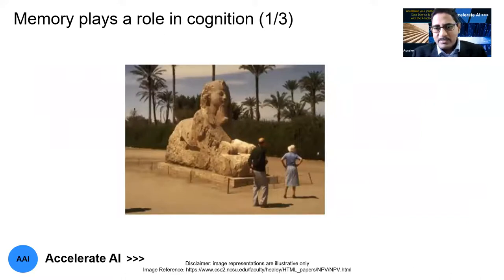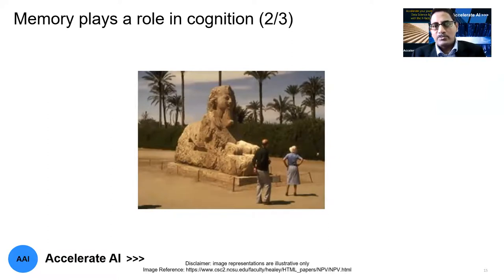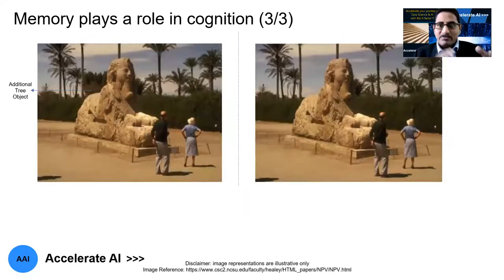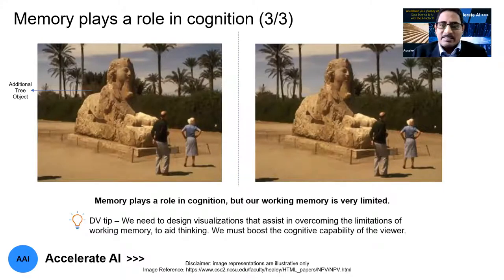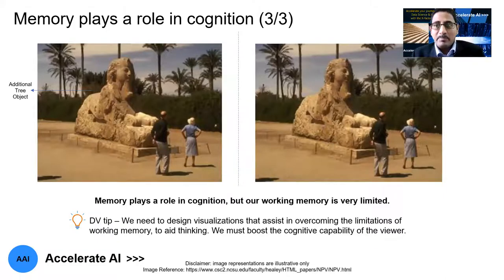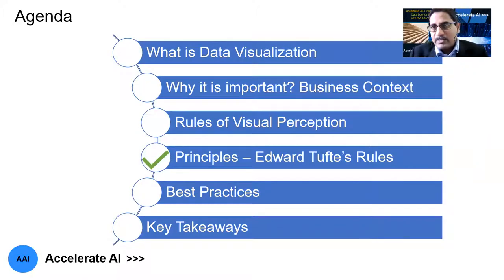Let's take a third example about memory and how it plays a role in our cognition. This is the first image. Now here is another image — did you find any difference? It's very difficult to tell. But if I compare both the first and second image side by side, you'll be able to see very clearly there is an additional tree object that differentiates the two pictures. What this means is memory plays a role in cognition. However, our working memory is limited, and we must work to boost the cognitive capability of the viewer who is looking at the visualization.